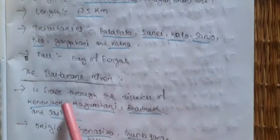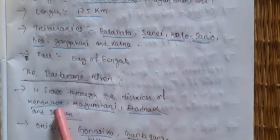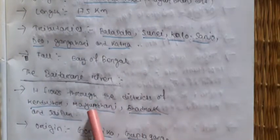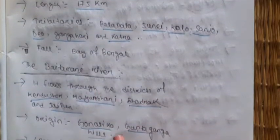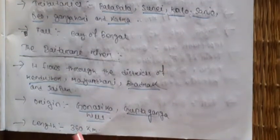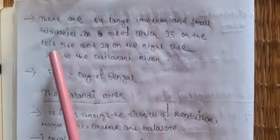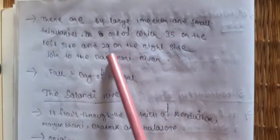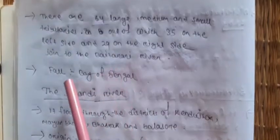Vaitarani river flows through the districts of Keonjhar, Mayurbhanj, Bhadrak, and Jajpur. Its origin is inside Odisha, at Gonasika in the Gupta Ganga hill. Length is 360 km. Vaitarani has 64 large, medium, and small tributaries — 35 on the left side and 29 on the right side. It finally falls into the Bay of Bengal.